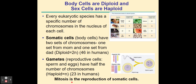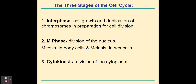Mitosis is a type of cell division that occurs in somatic cells. Gametes undergo a special type of cell division called meiosis, which we'll learn about in another slide presentation. The three stages of the cell cycle are interphase, M-phase, and cytokinesis. Interphase is where the cell is the majority of the time — growing, duplicating its chromosomes, and preparing for division. M-phase is division of the nucleus: if it's a body cell, M stands for mitosis; if it's sex cells — eggs or sperm — M stands for meiosis.